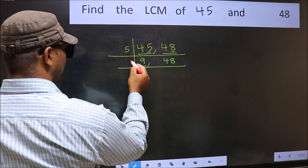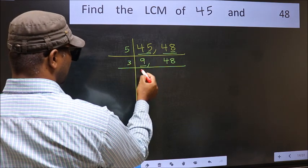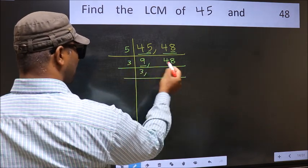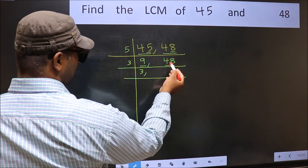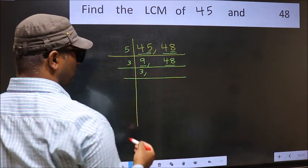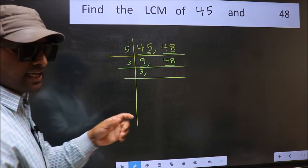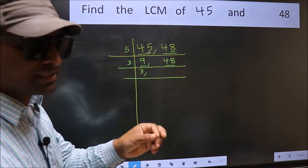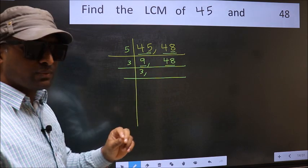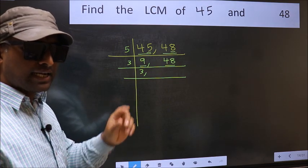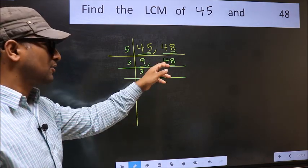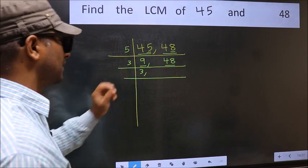Now here we have 9, and 9 is 3 times 3. The other number 48 — to check whether 48 is divisible by 3 or not, add the digits: 4 plus 8 gives us 12. And 12 is divisible by 3, so this number is also divisible by 3.